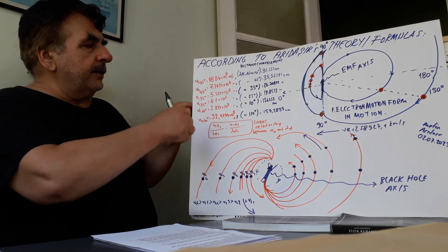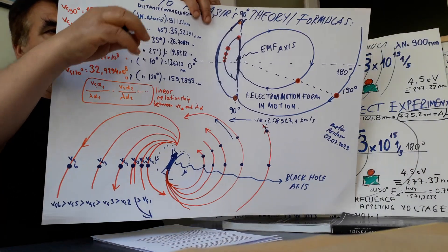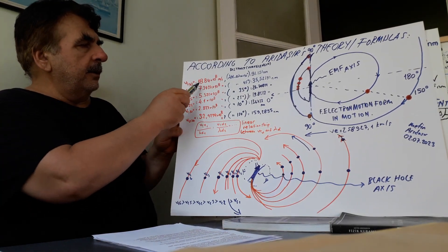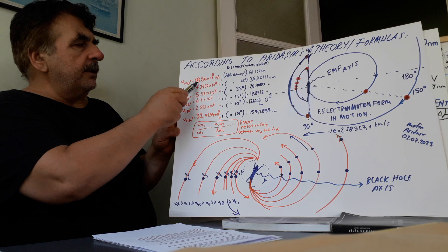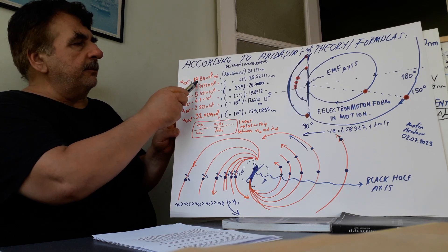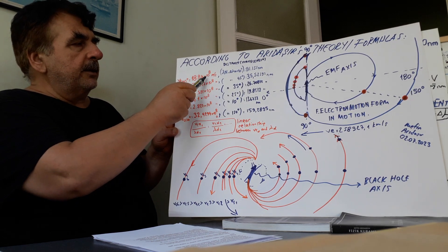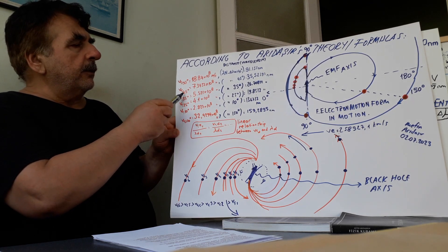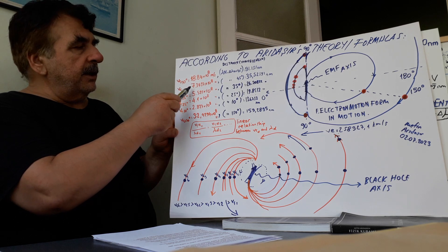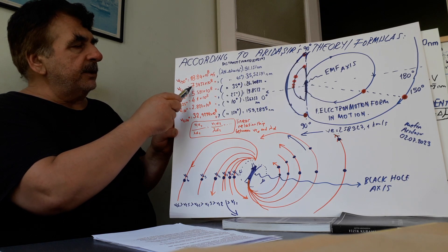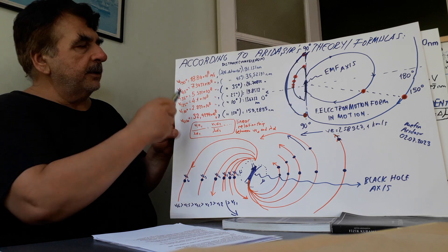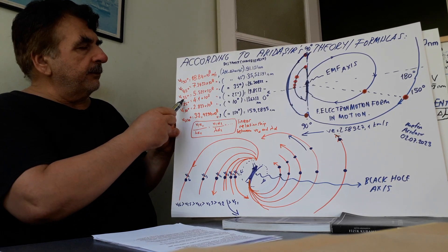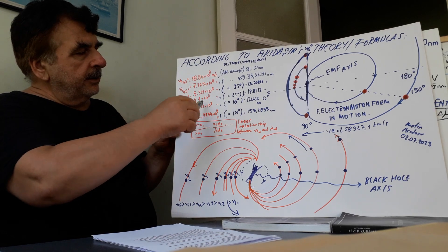For instance: at 90 degrees, the point velocity is 18.8 × 10⁸ meters per second. At 40 degrees direction, the linear velocity is 7.3 × 10⁸ meters per second. At 45 degrees, the velocity decreases. For 150 degrees, it increases again, returning to 90 degrees.